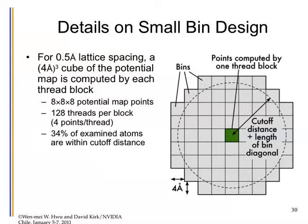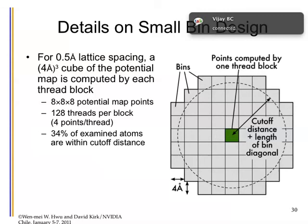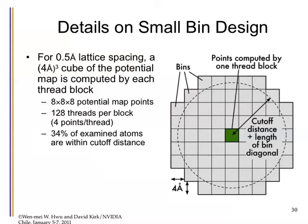A little bit more detail about the small beam design. If you think about a half an angstrom lattice spacing and then designing a 4 angstrom cube, the potential map is essentially going to give you 8 lattice points in each dimension. That gives you 8×8×8 potential map points, which is 512 — wait, 8×8×8 is 512, but here it's described as 128. That's a reasonable number of threads, and here you can get about 34% efficiency.